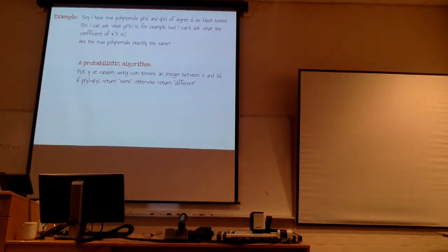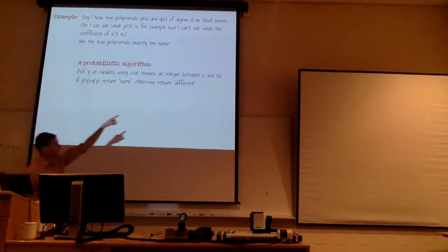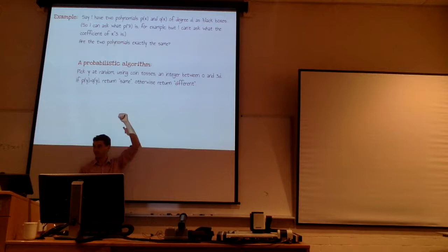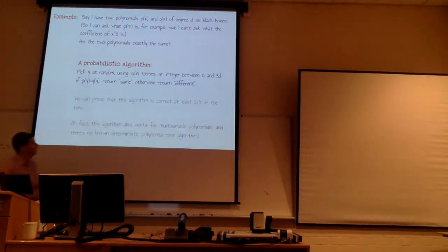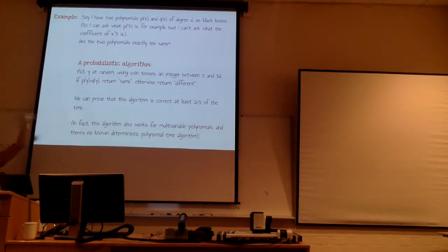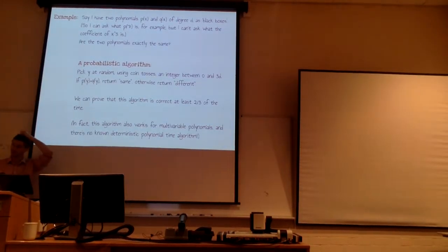What you can prove is that this gives the correct answer at least two-thirds of the time. Certainly, if you get different answers from p(y) and q(y), the polynomials have to be different. And it's not too hard to see you get the right answer most of the time anyway: among these numbers 0 through 3d, the polynomials only have degree d, so only at most d of those numbers could be a root of p minus q. This algorithm also works for multivariable polynomials. And remarkably, there's no deterministic algorithm that's as fast — you genuinely seem to need randomness to do polynomial identity testing fast.